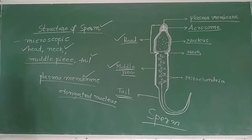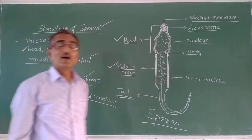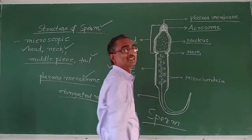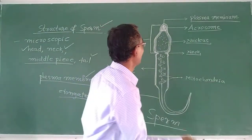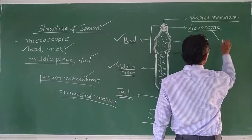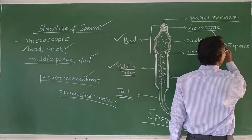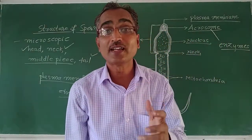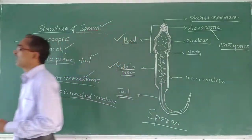This acrosome is a cap-like structure above the haploid nucleus, and it is filled with enzymes. These enzymes are very much essential for fertilization with the ovum or egg.